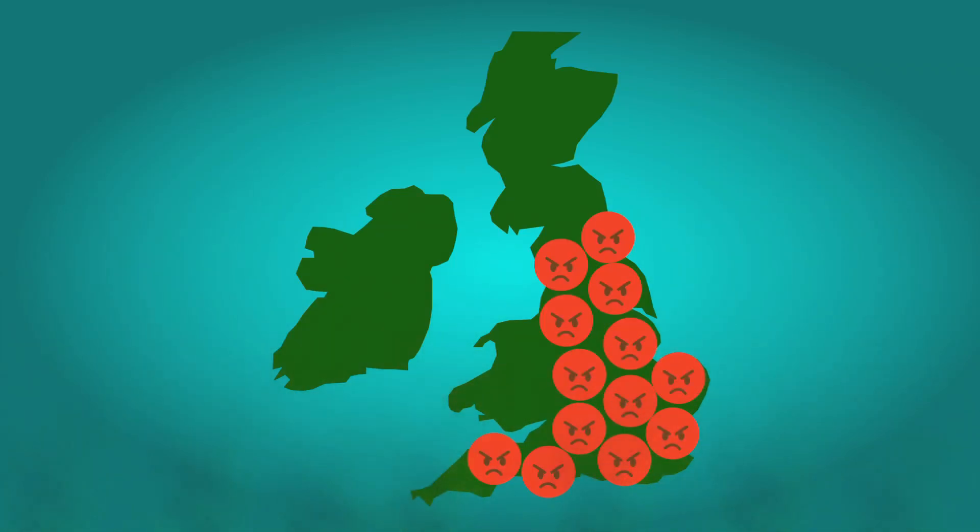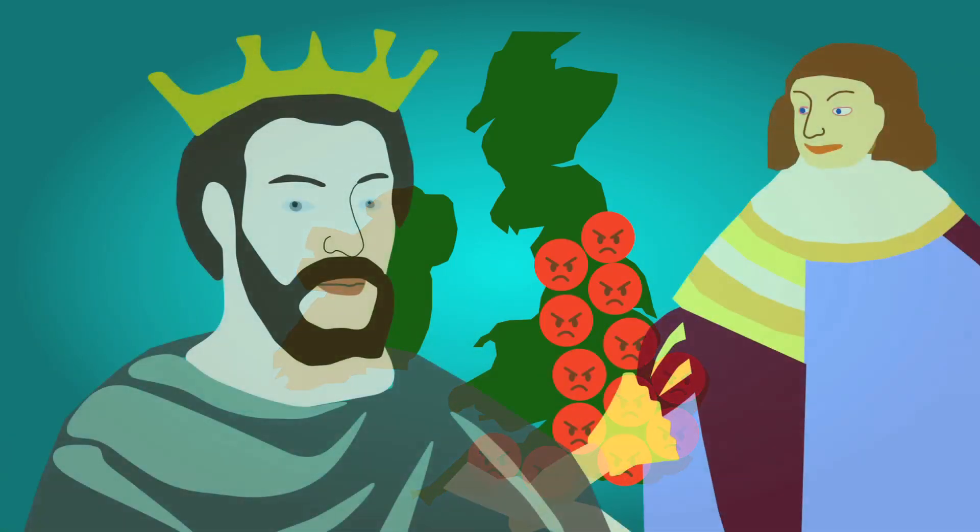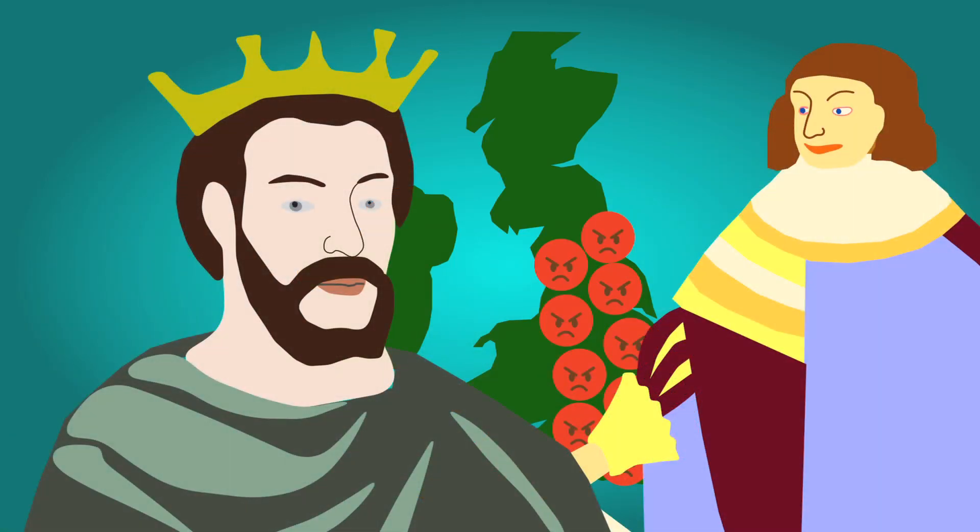John also fell out with England's barons, who owned most of the land and provided most of the king's army. John needed money to fight wars and so he raised the barons' taxes.